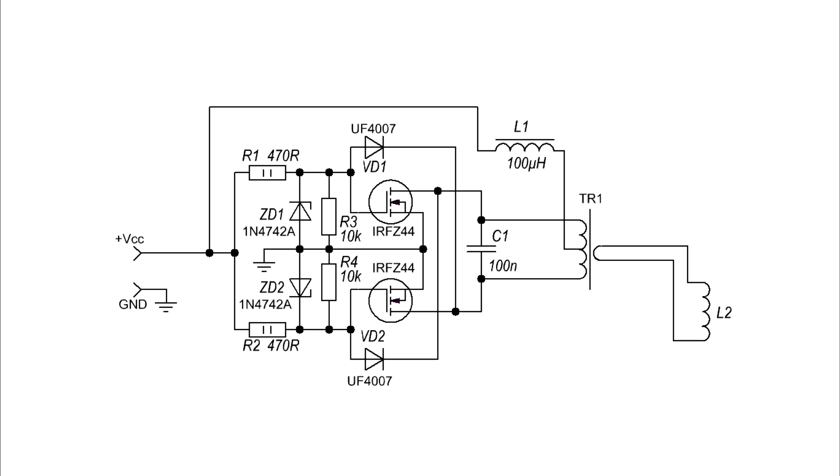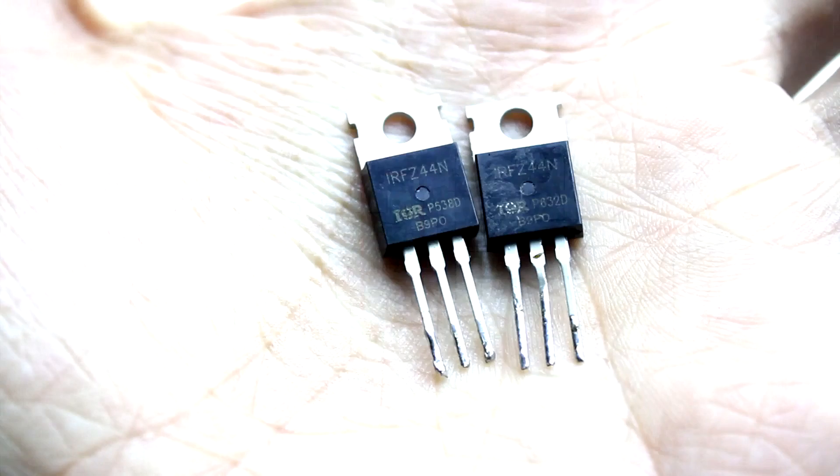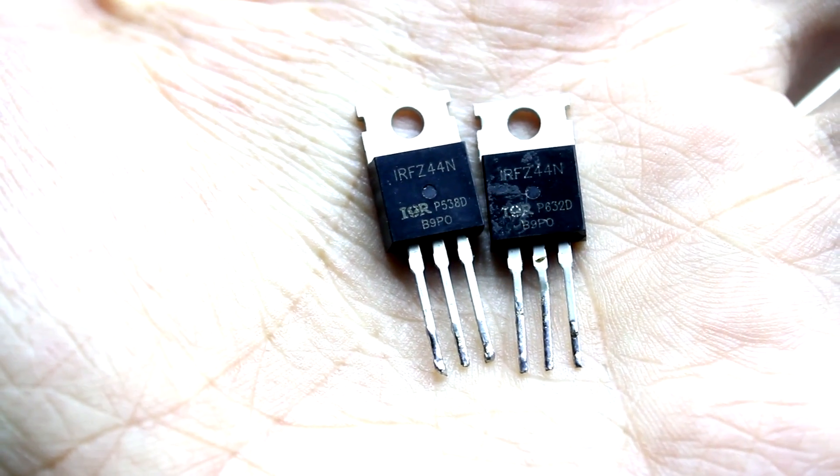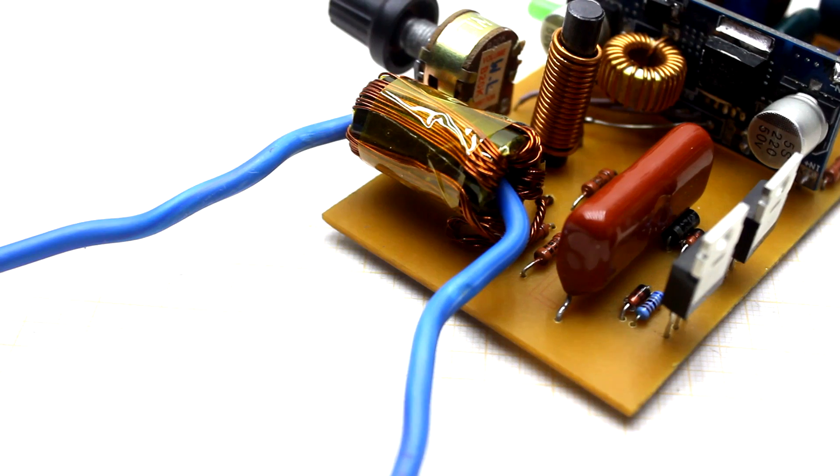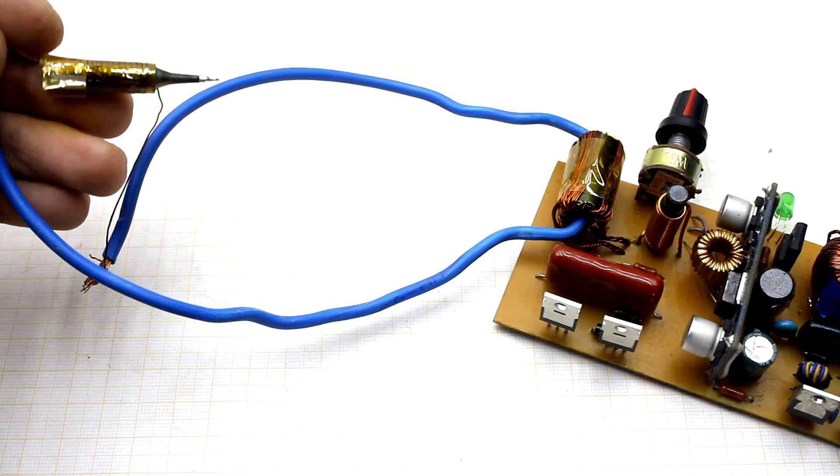The circuit of the generator is built on the basis of two field effect transistors IRFZ44. You can use others with a current of 20 amperes. I don't advise less. Transistors are loaded with a pulse transformer, the secondary winding of which is an incomplete turn of a thick copper wire. The ends of the thick wire are connected to the inductor.